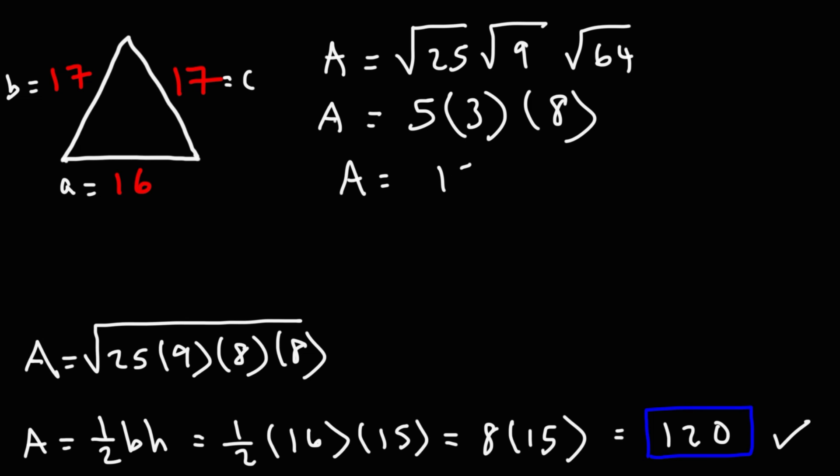Now, 5 times 3 is 15. And we already know what 15 times 8 is. It's the same as 8 times 15, which is 120. So, we do get the same answer, regardless of the methods that we choose to use. So, the area of this particular isosceles triangle is 120 square units.